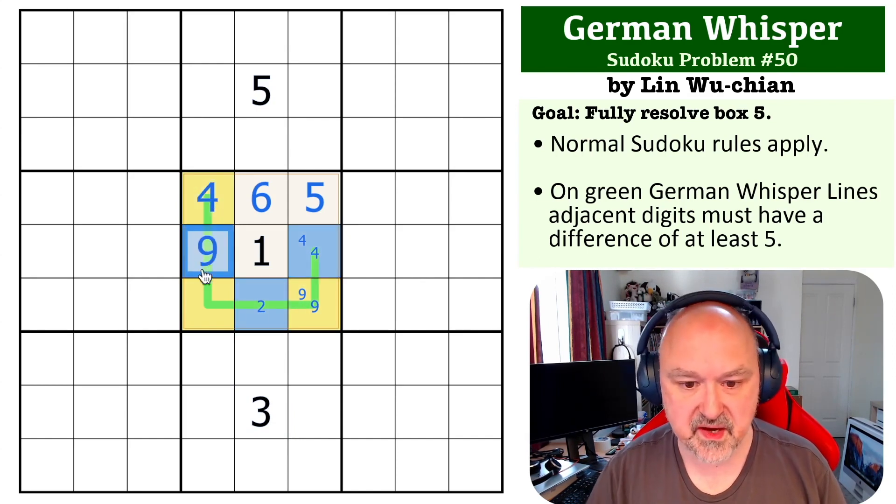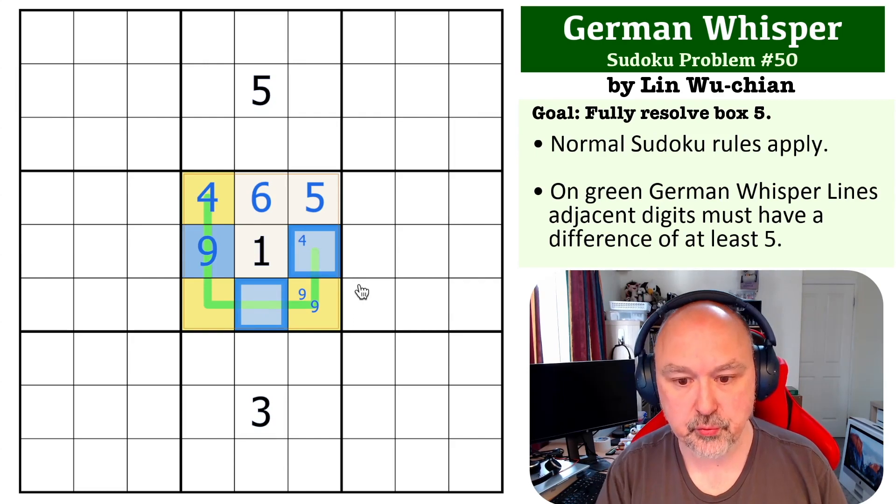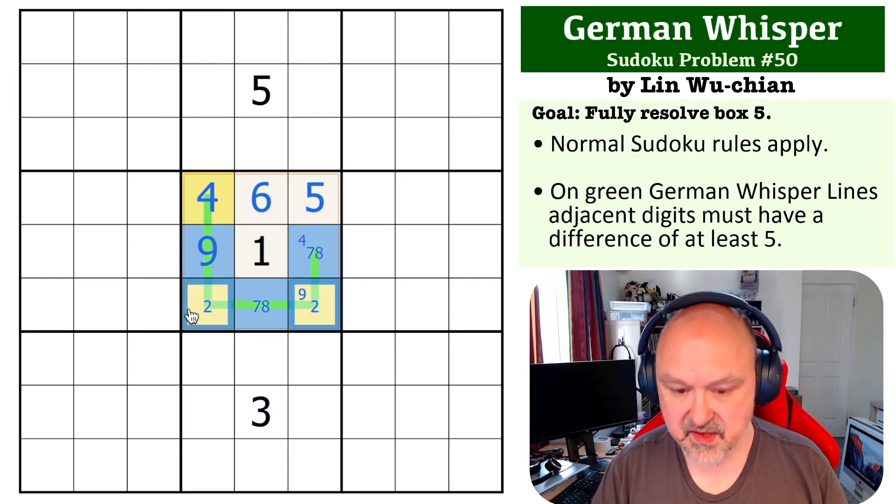This becomes the four, this becomes the nine, and now blue we know is high. So these become seven, eight, and these become two, three.